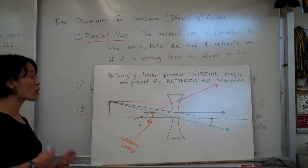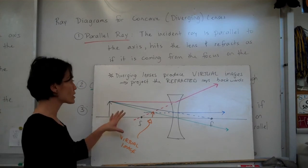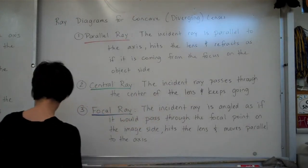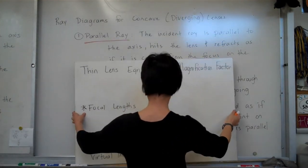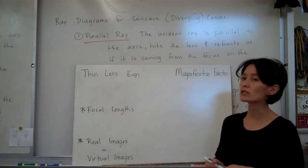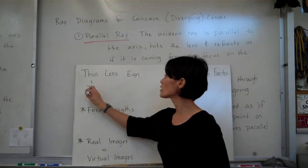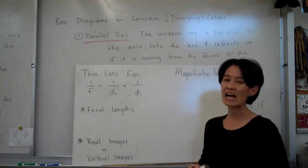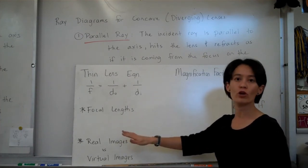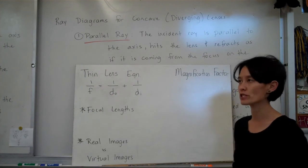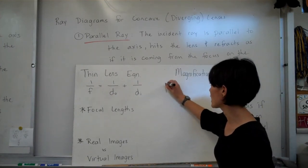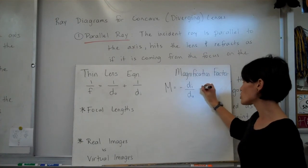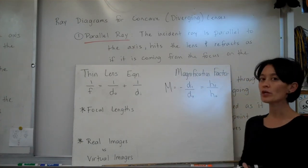Along with the ray diagrams, we also have a mathematical model: the thin lens equation. It is identical to the mirror equation: 1 over the focal length equals 1 over D-O plus 1 over D-I. This can also be written as F-inverse equals D-O-inverse plus D-I-inverse. The magnification factor is also the same: magnification equals negative D-I over D-O, and it's also equal to H-I over H-O.